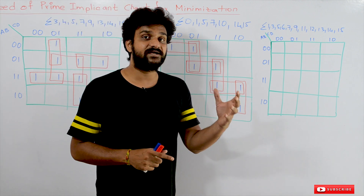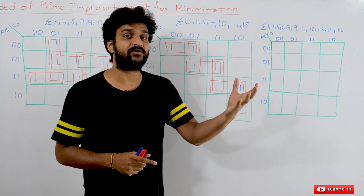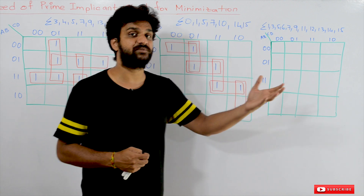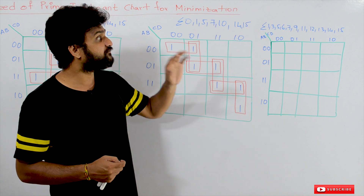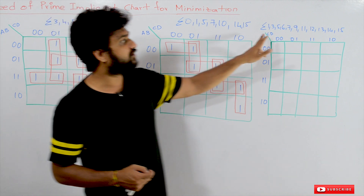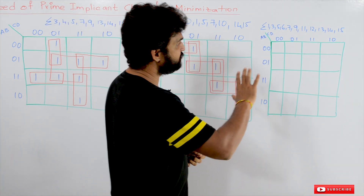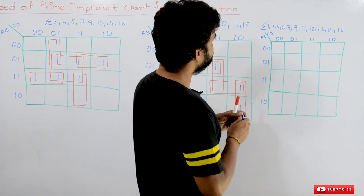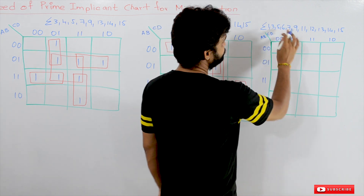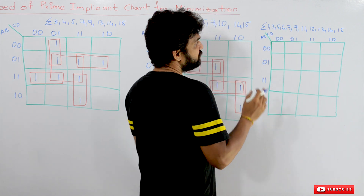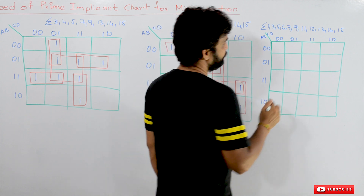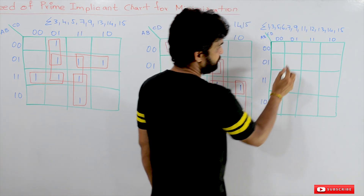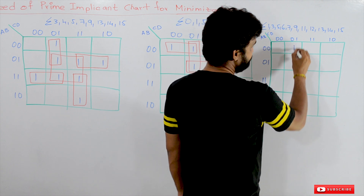In order to have a quick recap of how we minimized Boolean expressions, we will solve this example very quickly. Here we have the minterms 1, 3, 5, 6, 9, 11, 12, 13, 14, 15. The first step is to represent these terms onto the K-map.